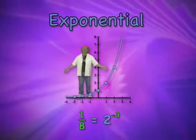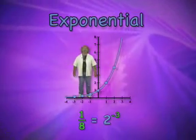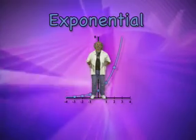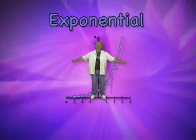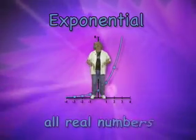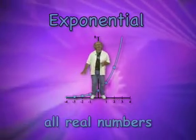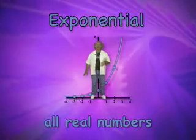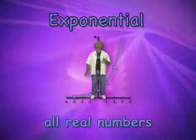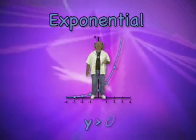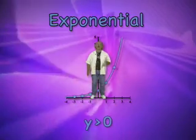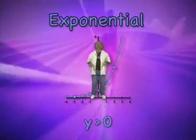So now that we understand the nature of the graph of an exponential function, let's talk about its properties. The x values of this function stretch infinitely in both directions, so the domain is all real numbers. But the y values never reach zero or go below the x-axis, though they do get infinitely larger as the x values increase. So the range of this function is the set of y values that are greater than zero.